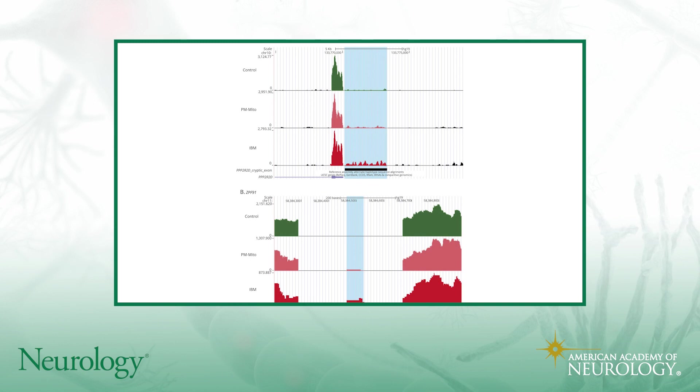The authors argue here that there's some similarity between IBM and PM-Mito, because in the healthy controls there's minimal inclusion of these cryptic exons. But in PM-Mito, it looks like there starts to be a little bit of inclusion, and then in confirmed IBM cases, that inclusion is even greater. The argument reached through this historical literature about molecular patterns in IBM is that PM-Mito is like it and represents an intermediate step to development of the full pathology.